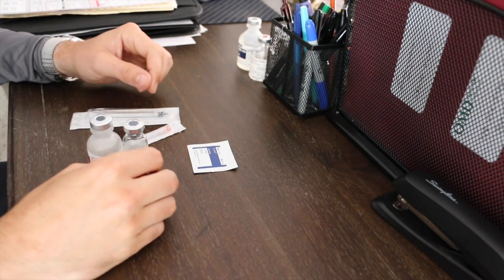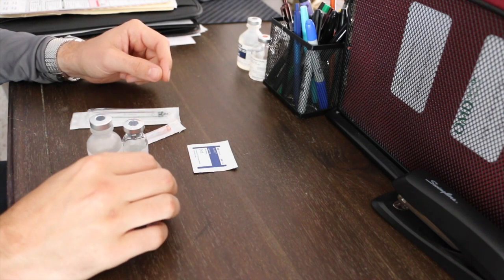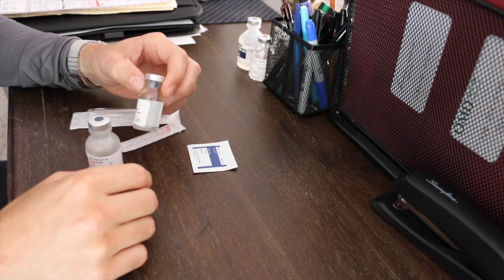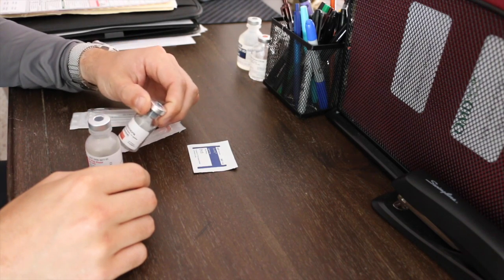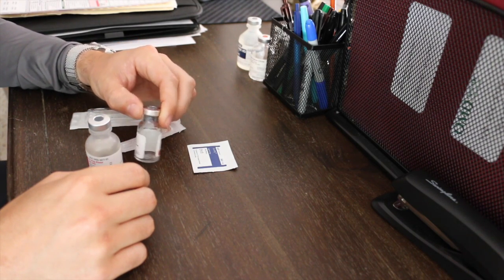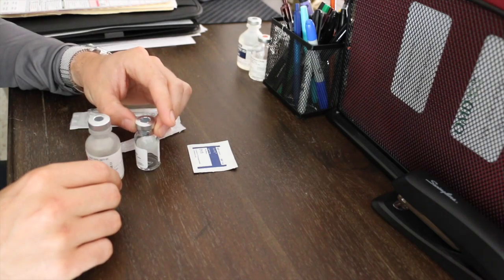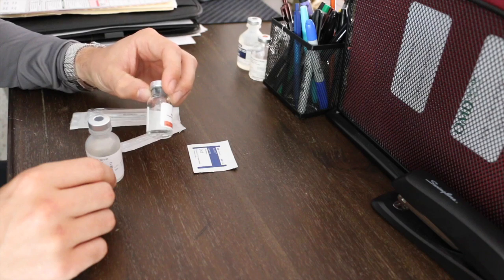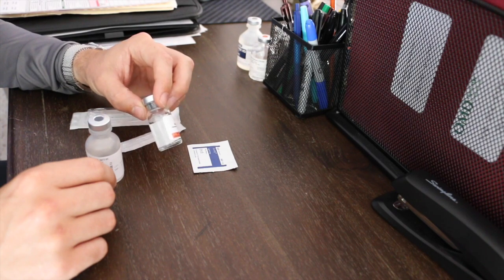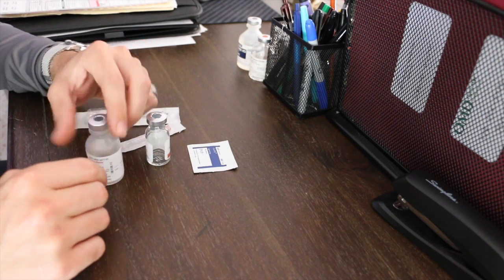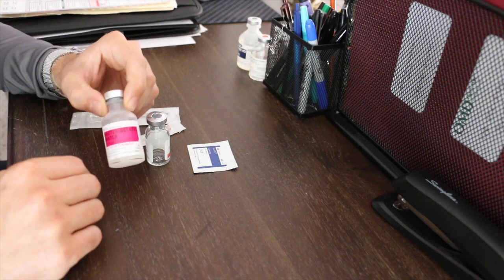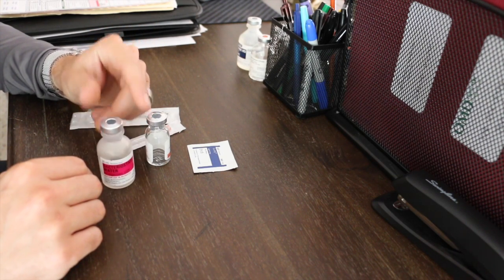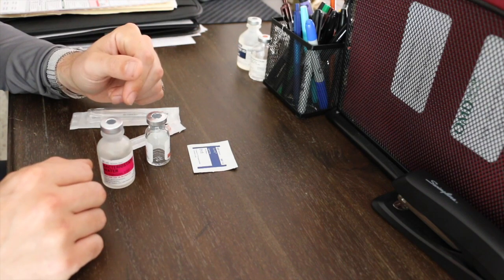Hey guys, just a quick video on how to reconstitute anything really that you're using. This is HCG, human chorionic gonadotropin. Compounds that you get from compounding pharmacies come in crystal form and need to be reconstituted with bacteriostatic water to return them to a liquid form for injection.